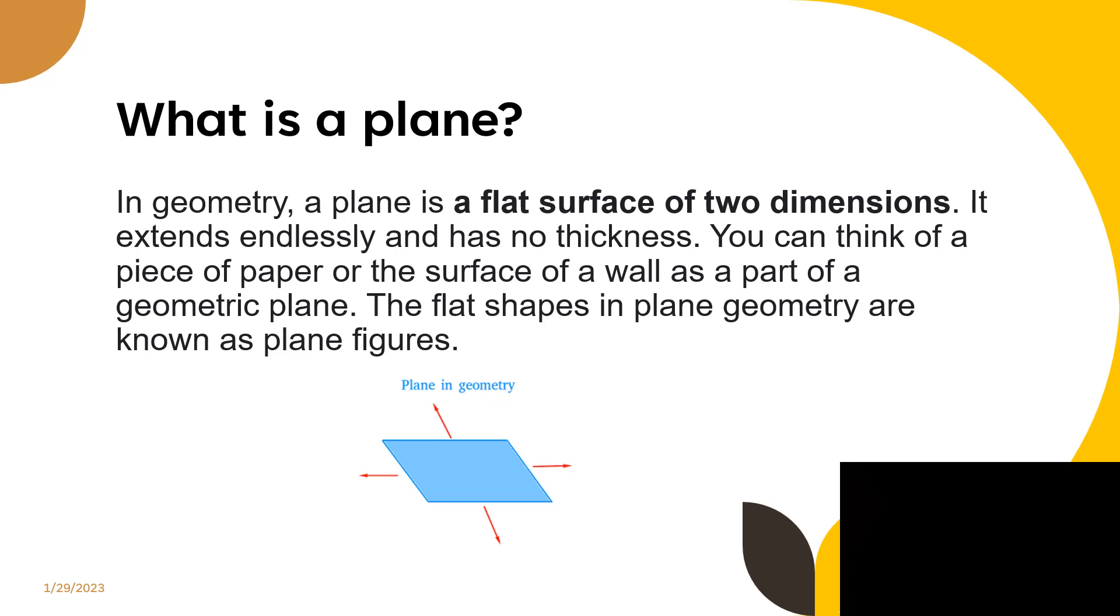What is a plane? In geometry, a plane is a flat surface of two dimensions. It extends endlessly and has no thickness. You can think of a piece of paper or the surface of a wall as part of a geometric plane. The flat shapes in plane geometry are known as plane figures. So these are plane figures.